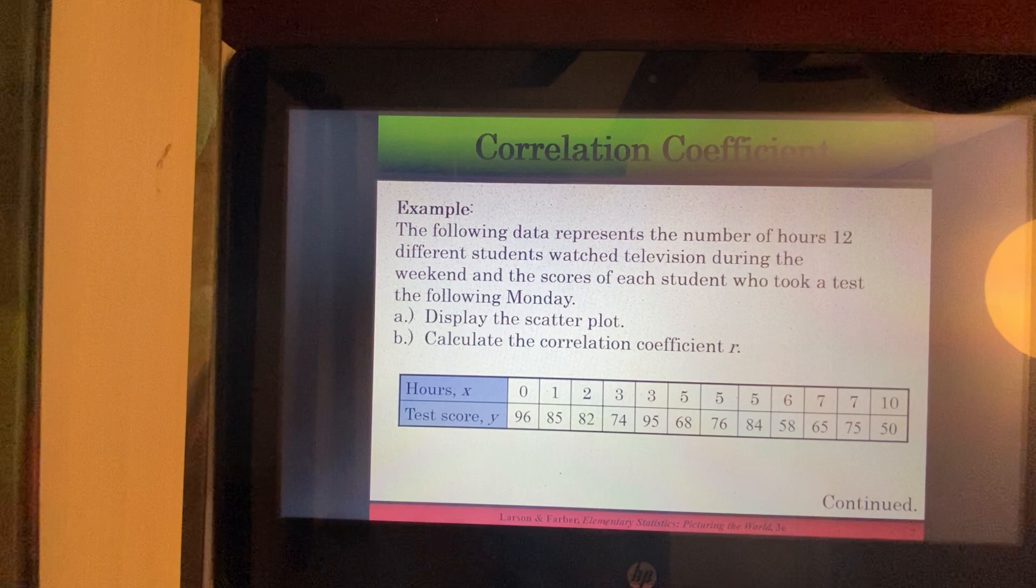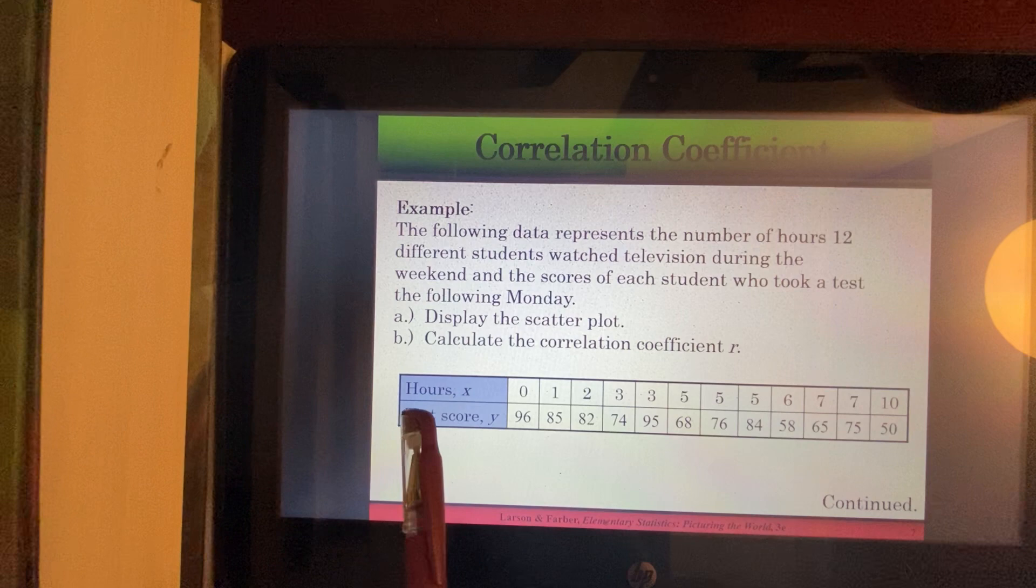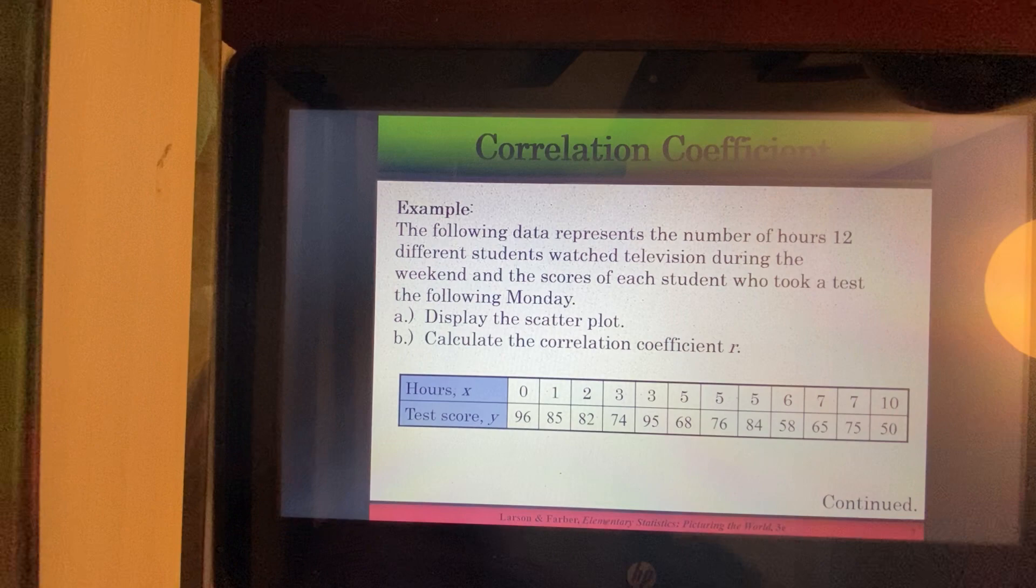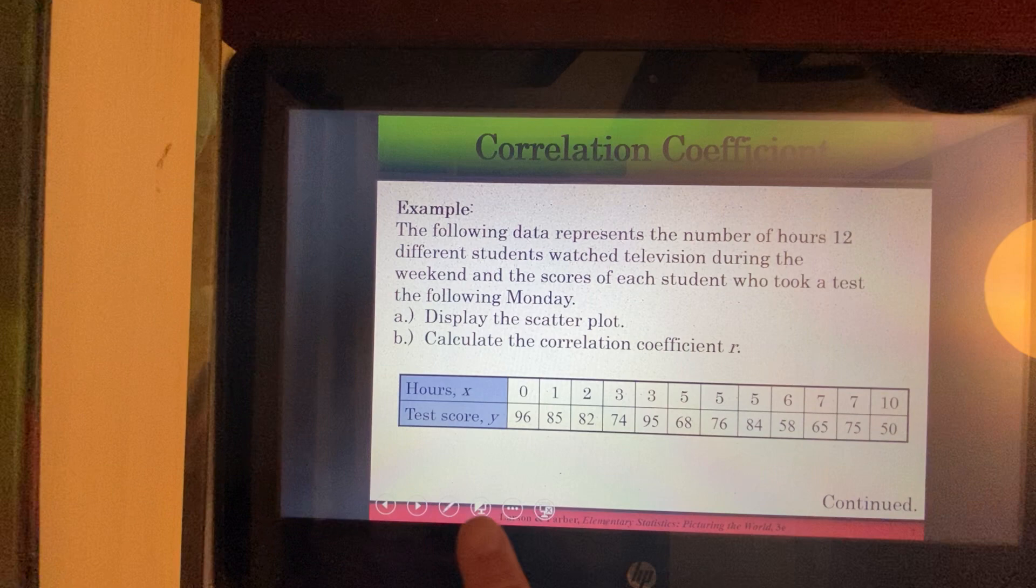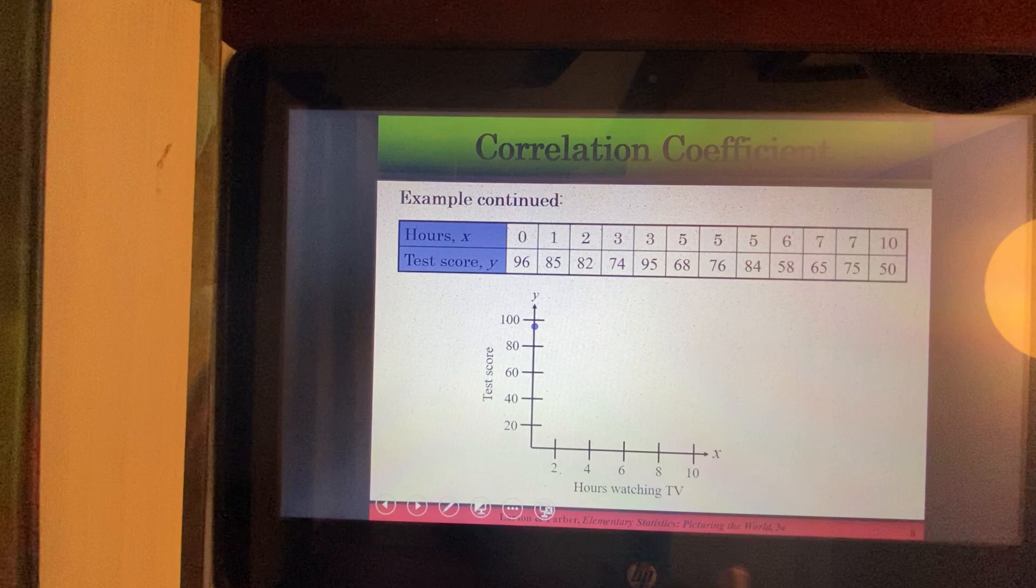So we're going to put that data onto a scatterplot. Again, it's going to be important that you get the hours, the X's on your X-axis. And that the test scores are going on the Y-axis. Okay, so let's take a look at the scatterplot. Okay, so here are our hours watching TV. Here are the test scores.